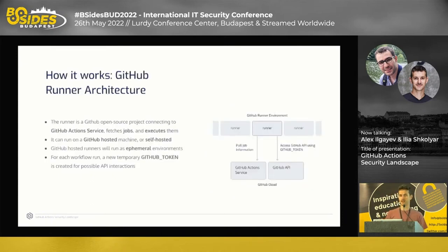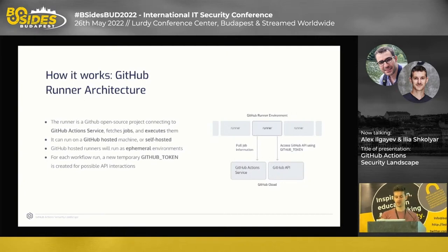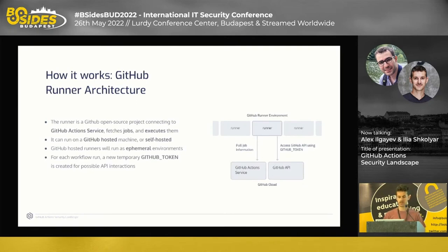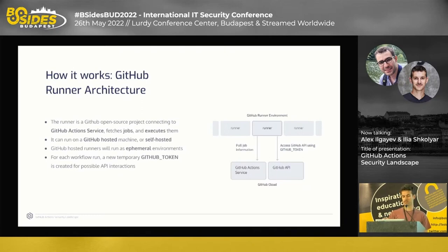GitHub Runner is an open source project that connects to the GitHub Actions service, fetches the jobs, and executes them. It can run on a GitHub-hosted machine, which is the popular use case, or on your self-hosted environment. GitHub-hosted runners run as ephemeral environments — created upon workflow triggering and destroyed after it ends. For each workflow, a new temporary GitHub token is created for possible API interactions.